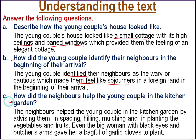Question C: How did the neighbours help the young couple in the kitchen garden? The neighbours helped the young couple by advising them in spacing, weeding, and mulching, and in planting vegetables and fruits. Even a big woman with black eyes and butcher's arms gave her a bag full of garlic cloves to plant.